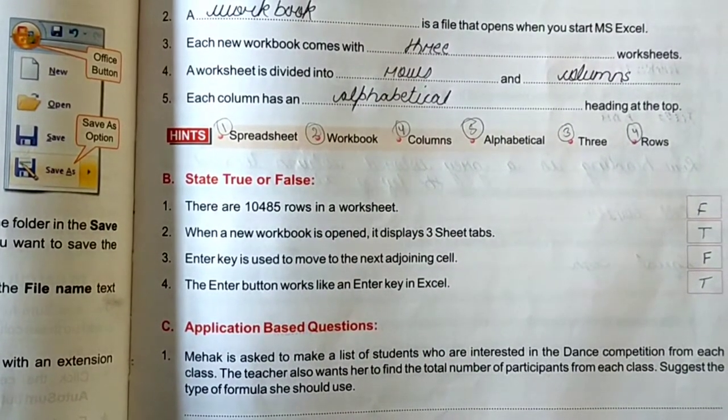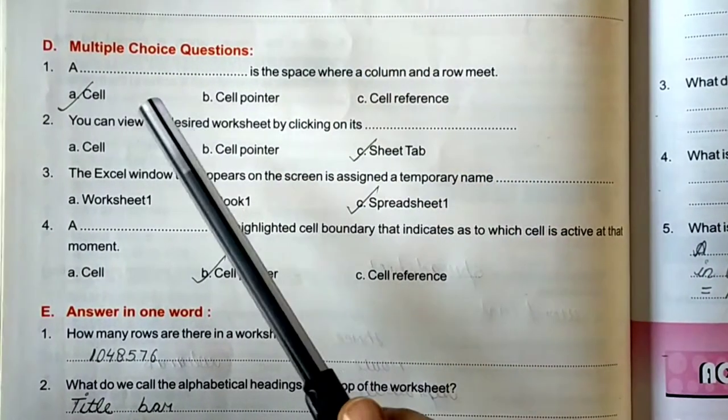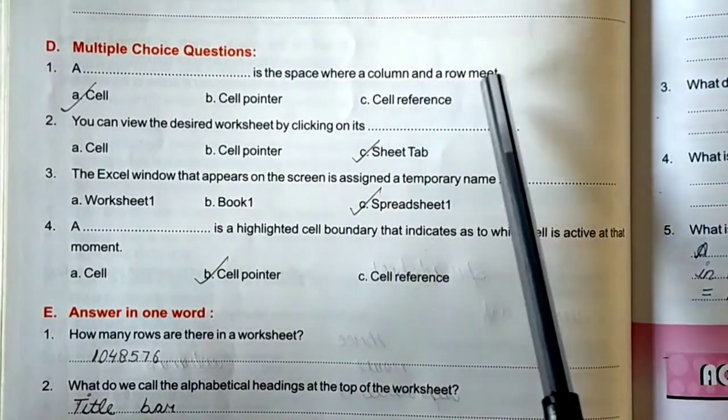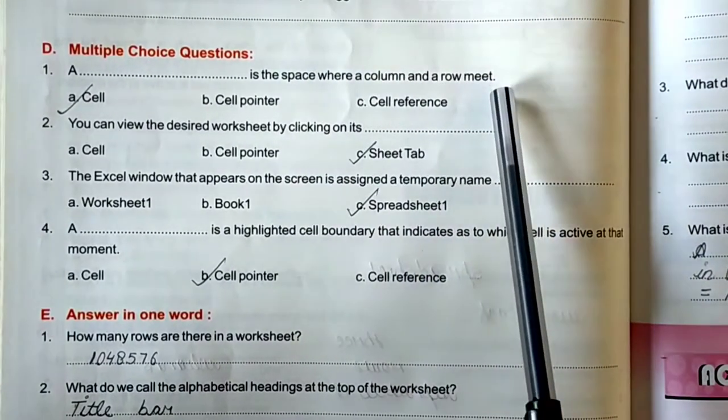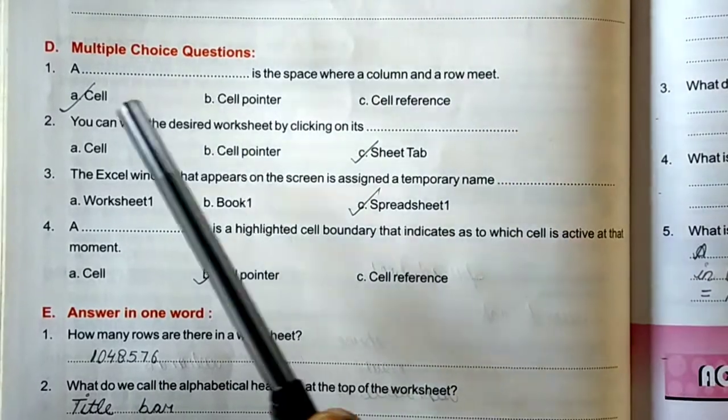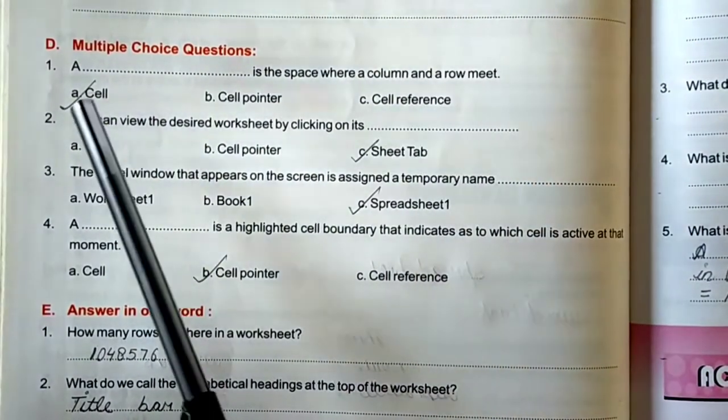So, these are your true and false. Now, multiple choice questions. Is the space where a column and rows meet? Cell, cell pointer, or cell reference. That is cell.